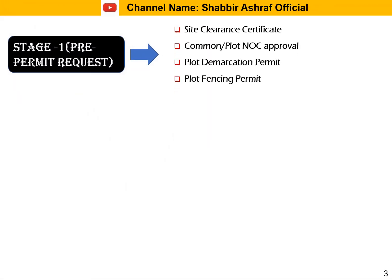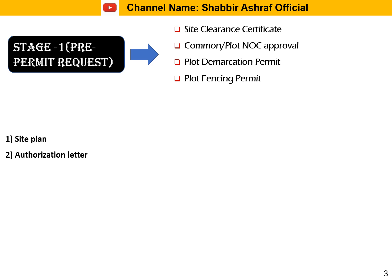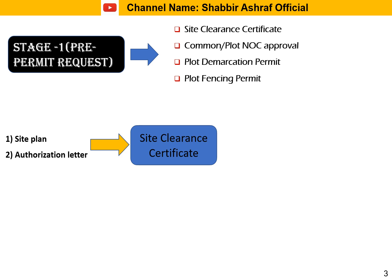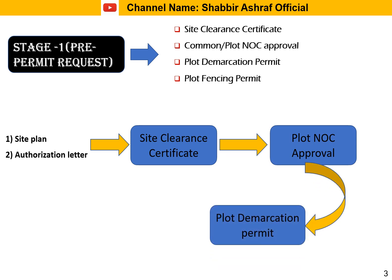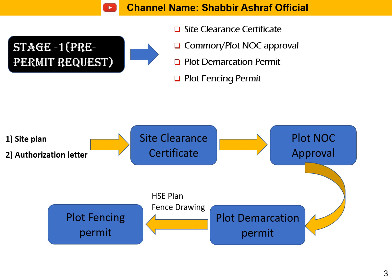In stage one prerequisite permits, three to four permits are required: site clearance certificate, common NOC, plot demarcation, and plot fencing. To start the permit process, we require a site plan and authorization letter, received with the contract award documents. We then go to the municipality portal to register the project and apply for site clearance. After receiving that, we apply for NOC approvals, then demarcation permit, then prepare the HSE plan and fencing drawing and apply for the plot fencing permit.